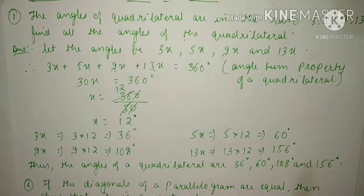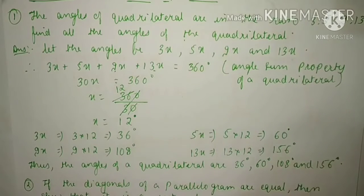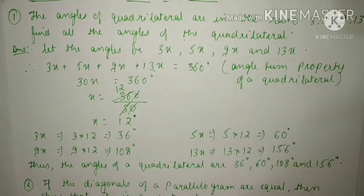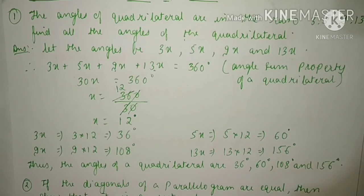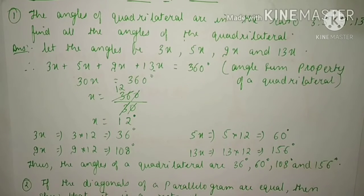The first angle is 3x. Put the value of x: 3 × 12 = 36°. The second angle is 5x: 5 × 12 = 60°.